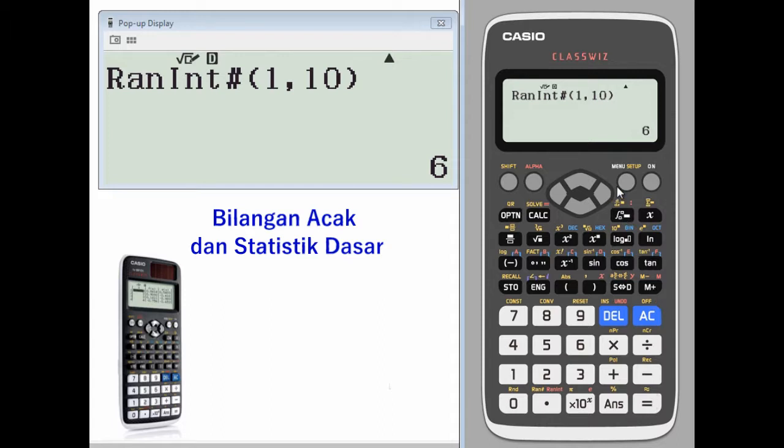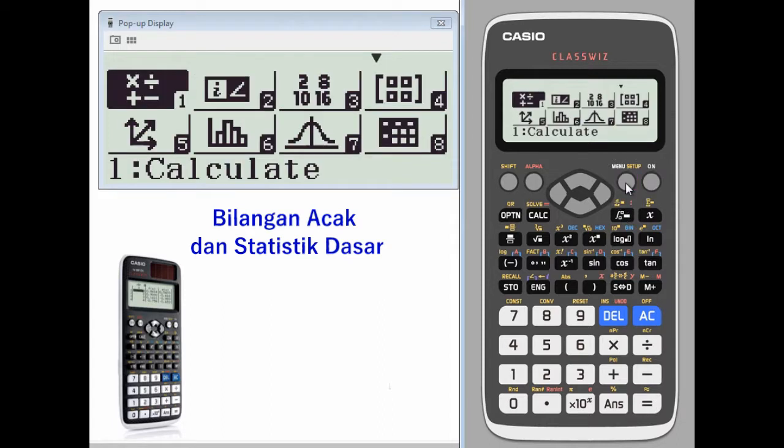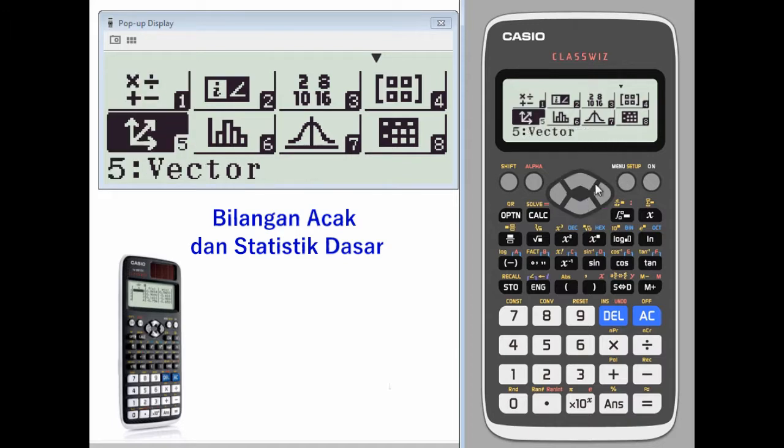Second place, we want to look at some basic statistics. Go to the menu. Statistics is number six. You can toggle down and press the number six.